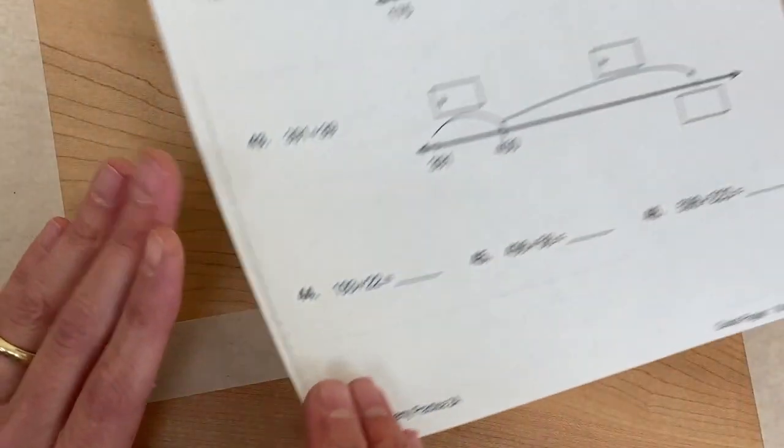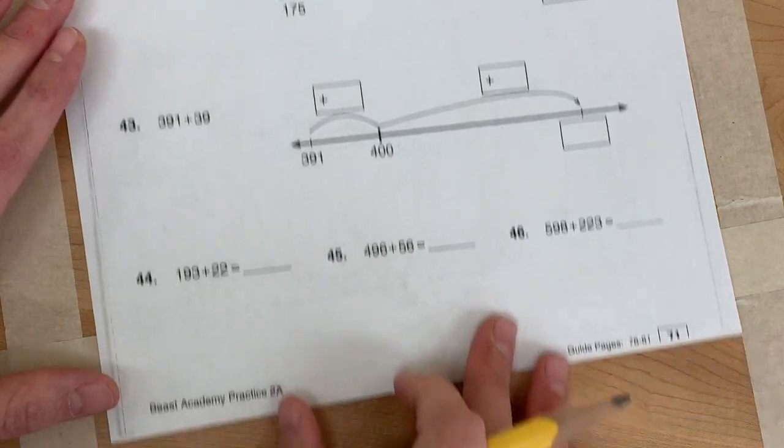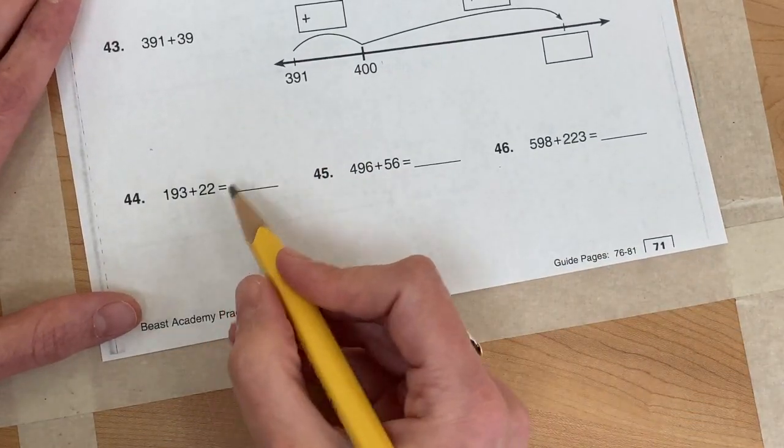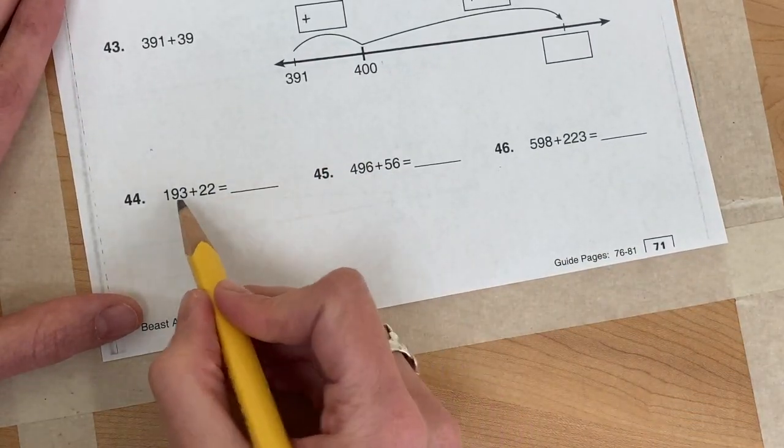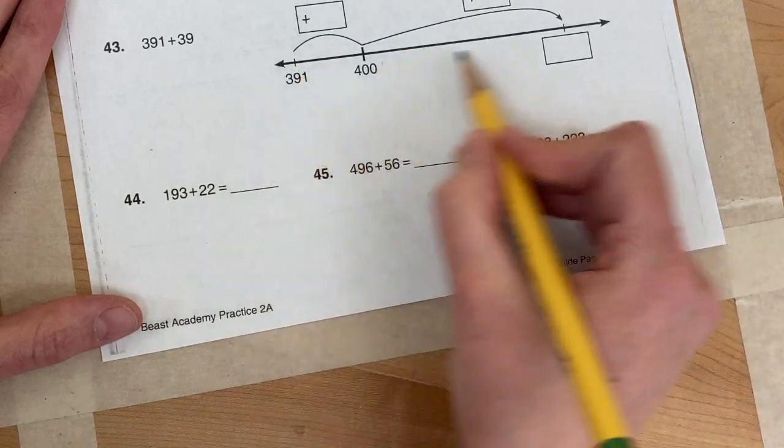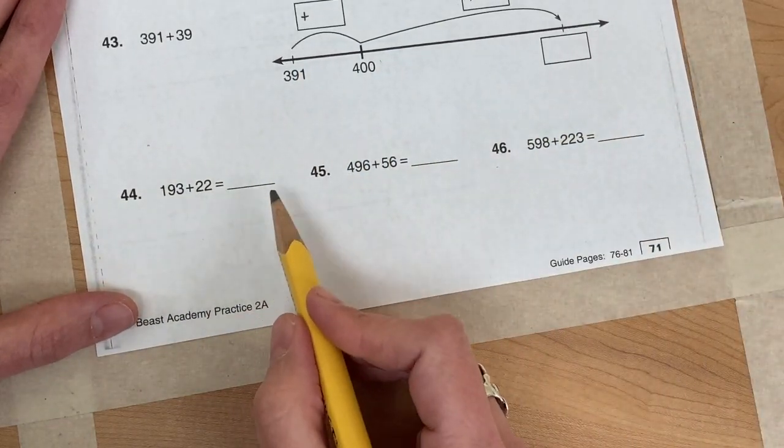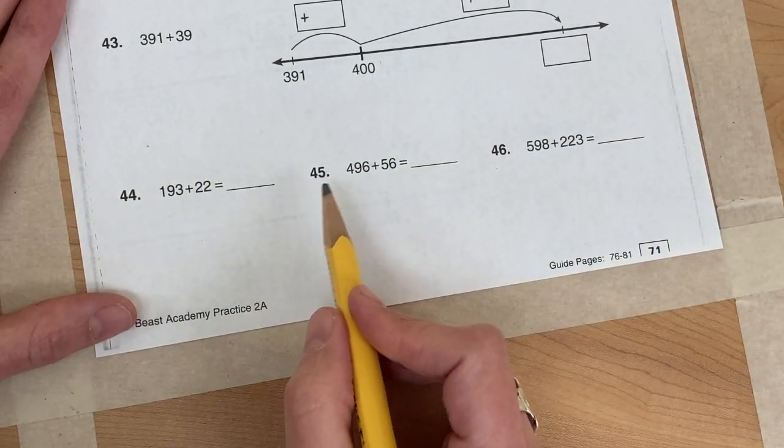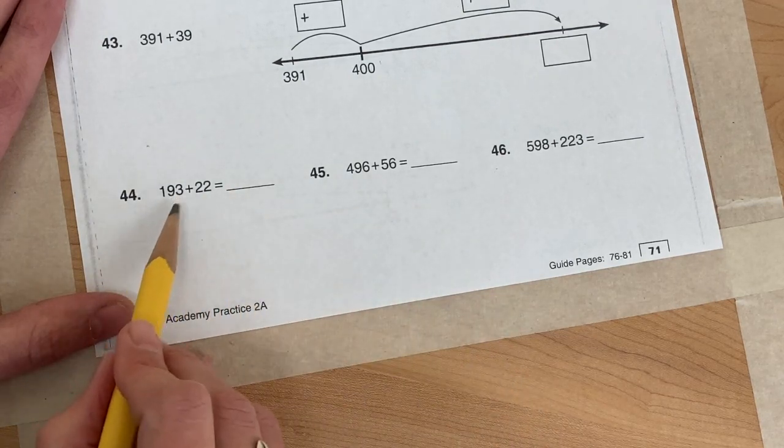Hopefully that will help you get all of these done. I think they're pretty much the same. But down here on the back, we have some problems where we don't have a number line. But you need to use the number line in your head. Really imagine that number line.